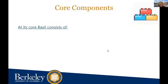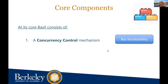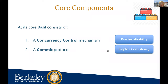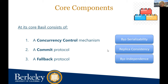At a high level, Bazel is made up of three core components: a concurrency control mechanism that allows optimistic parallelism but ensures Byzantine serializability; a commit protocol that merges replication and concurrency control to avoid redundant coordination and efficiently ensure consistency within and across shards; and a fallback protocol that allows clients to maintain independent operability in the face of Byzantine failures. My goal for the next slides is to give an overview of the work rather than go into huge technical detail — I want to emphasize and sketch out the hard and interesting parts.